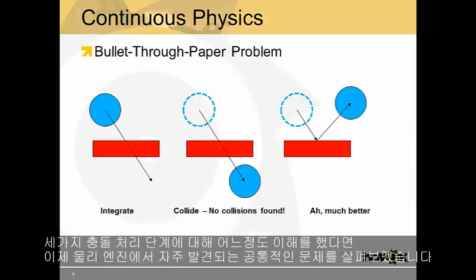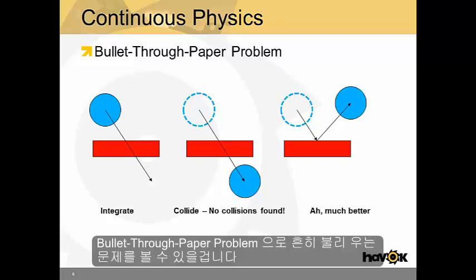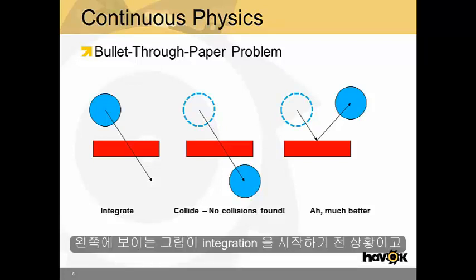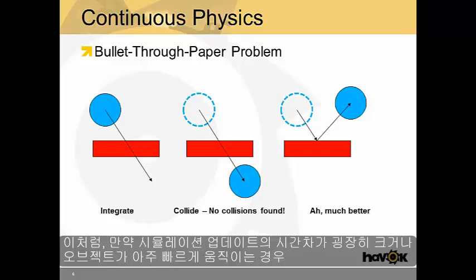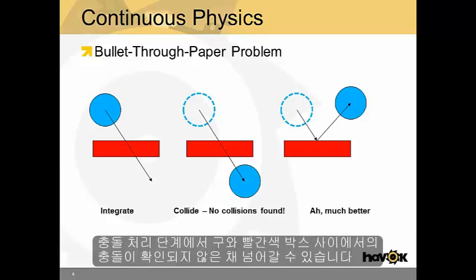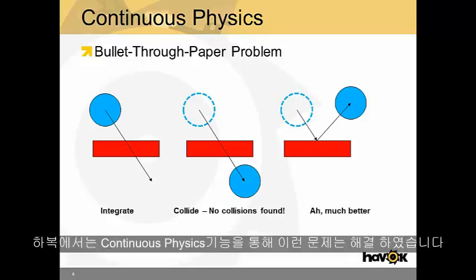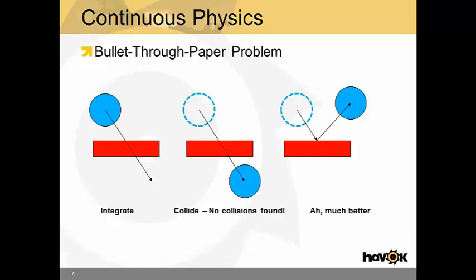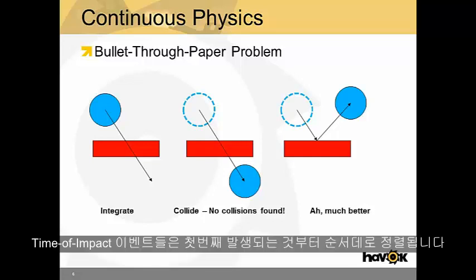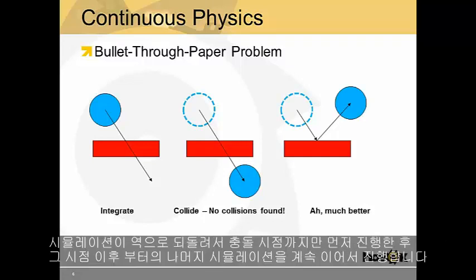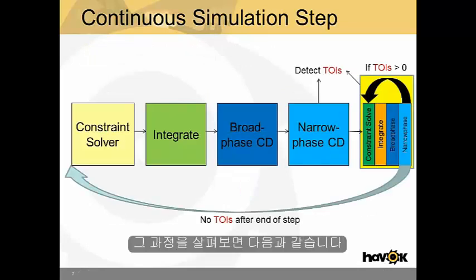Now that we understand the collision detection phases, let's look at a problem very common to physics engines. If the simulation step is sufficiently large, or objects are moving fast enough, the collision detection phase will never pick up the collision between the sphere and the red box — the object tunnels through. Havok solves this through what it calls continuous physics. In continuous physics, objects are swept through the world and generate what we call TOIs, or time-of-impact events. TOIs are sorted from first to last. The simulation is backtracked, the collision is registered, and then the simulation moves forward from there.